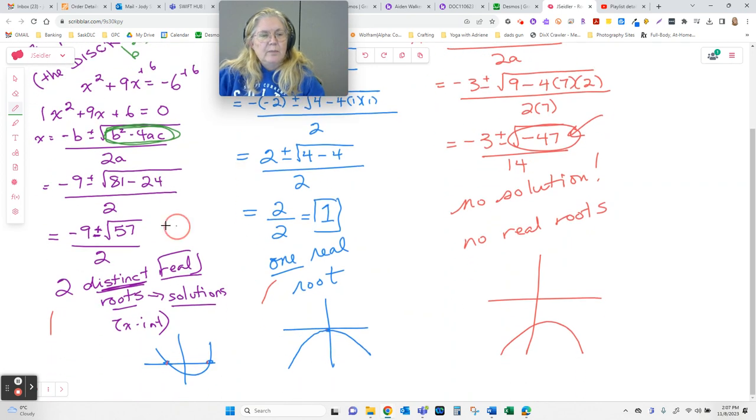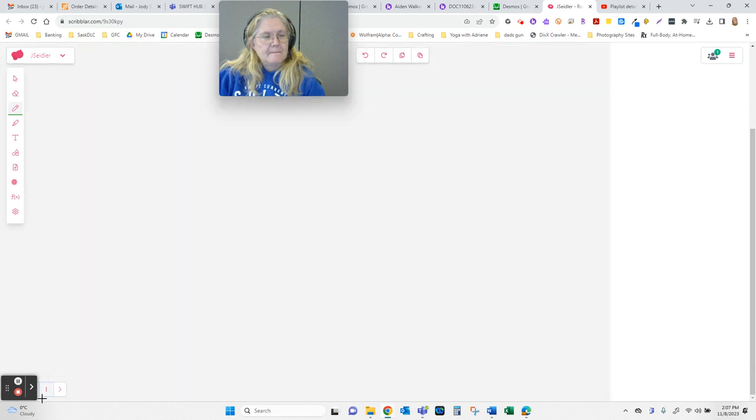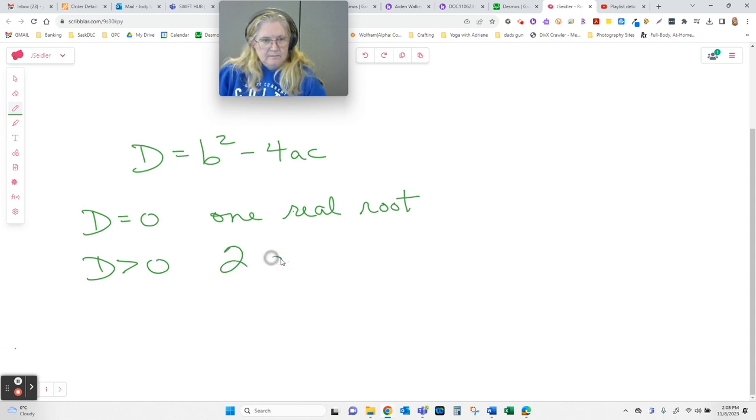When it is a positive, we get 2 real roots. When it's 0, we only get 1. When it's a negative, we get none. Our discriminant is b squared minus 4ac. When it equals 0, we get 1 real root. When it's positive, we get 2 distinct real roots. When it's negative, you get none.